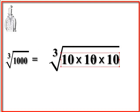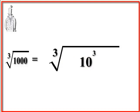A thousand is ten times ten times ten. Another way to write that is ten cubed.